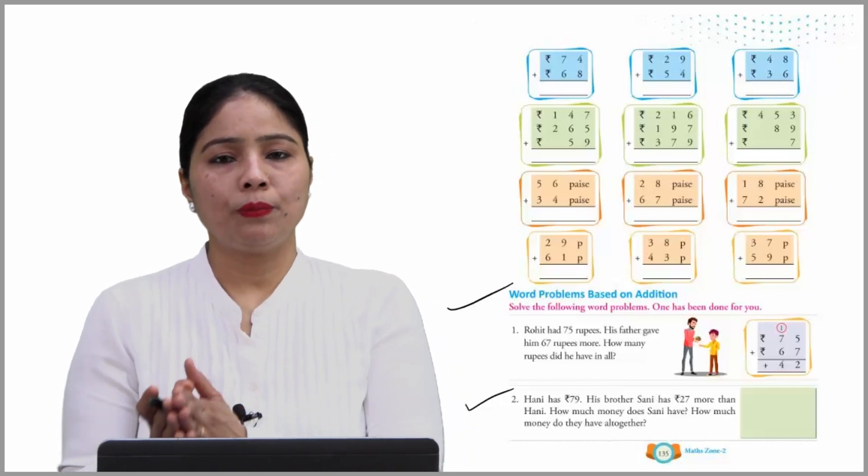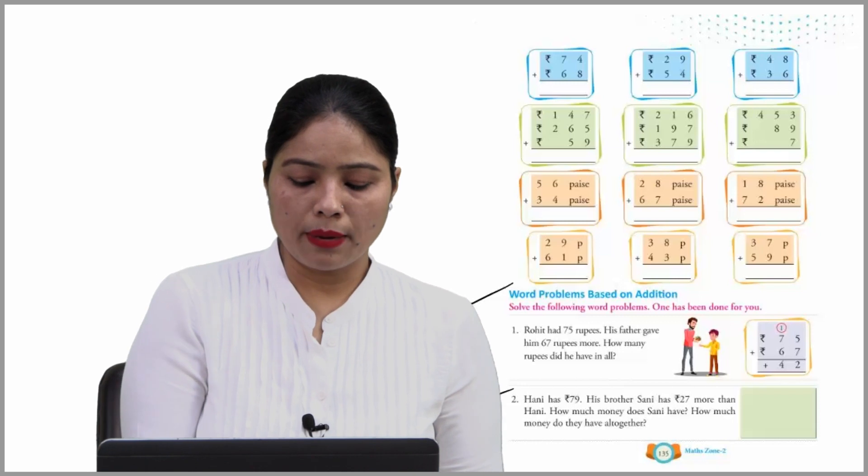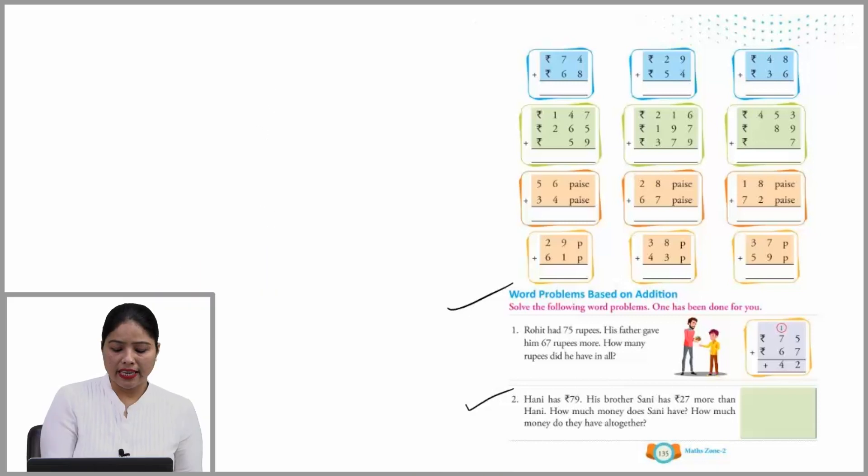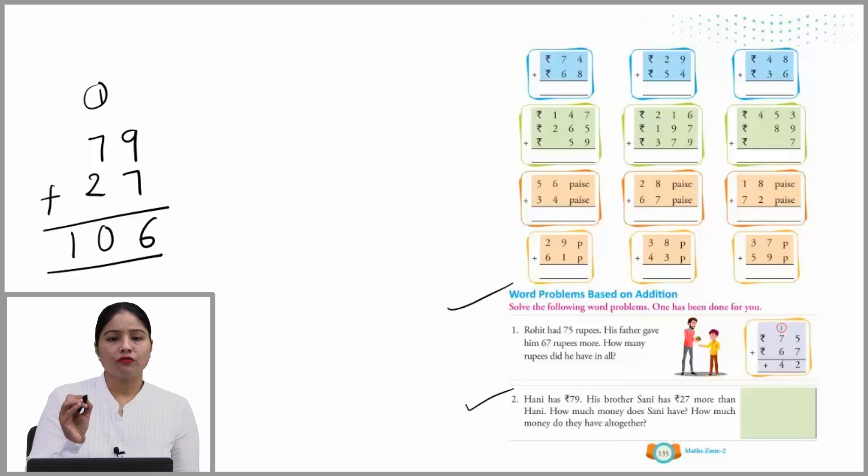Let's find out Sanny's rupees first. We will add 79, because those are Harry's rupees, and his brother has 27 more. So add 27 to them. 9 plus 7 is 16. Carry 1. 7 plus 2 is 9, and plus 1 is 10. So we can say that Sanny has 106 rupees.